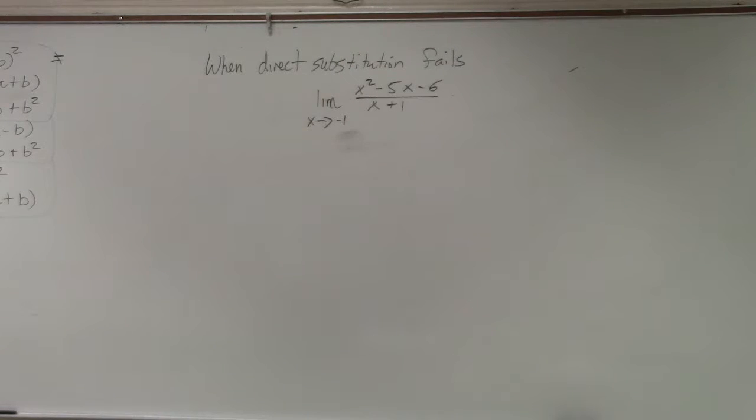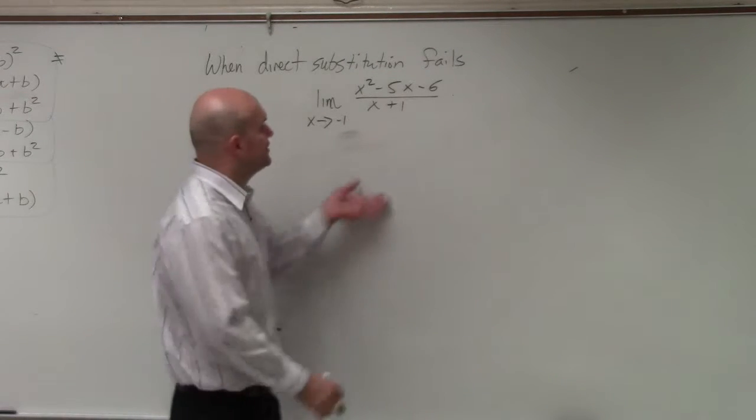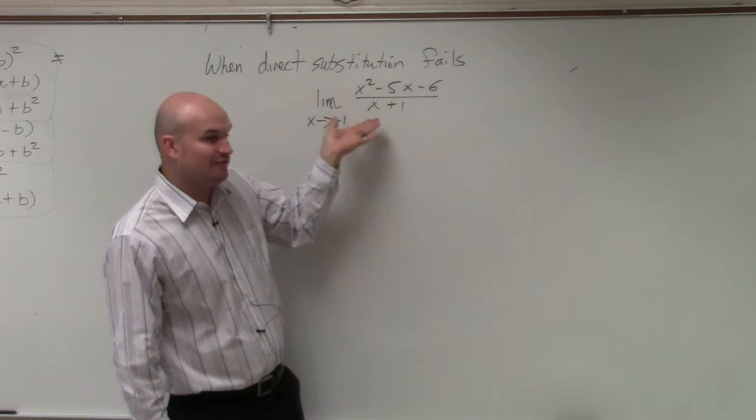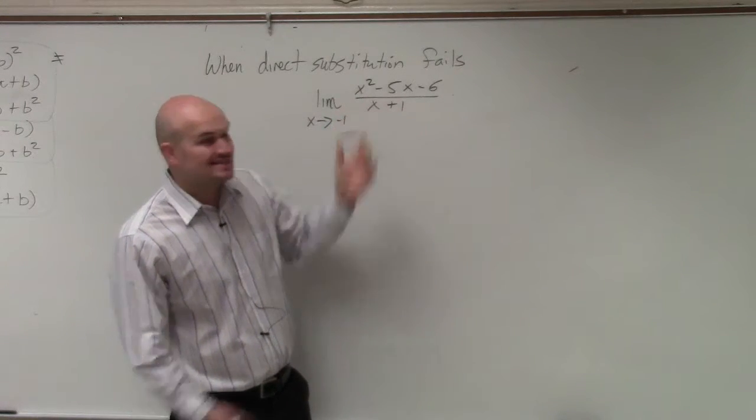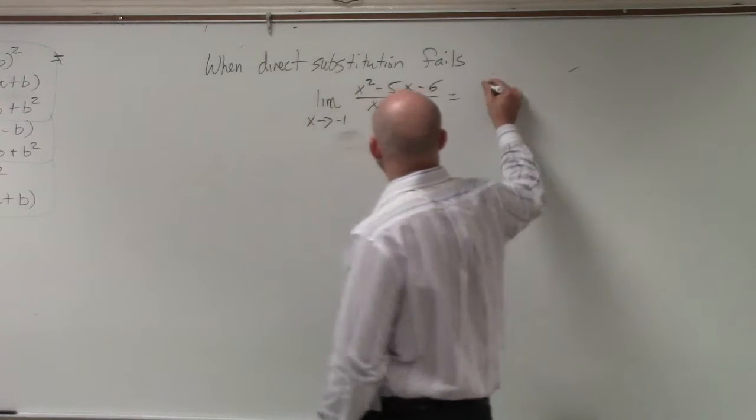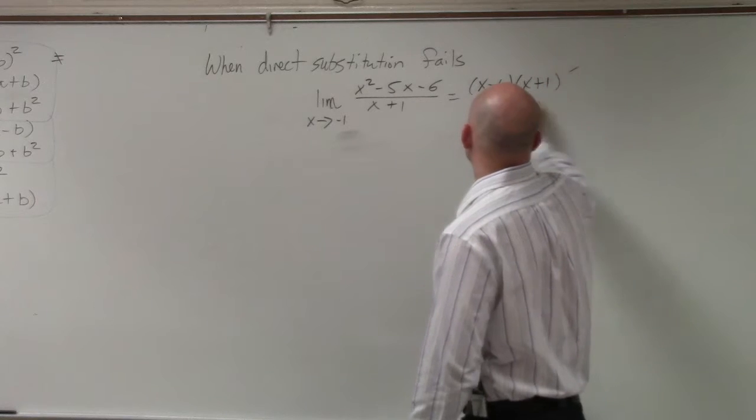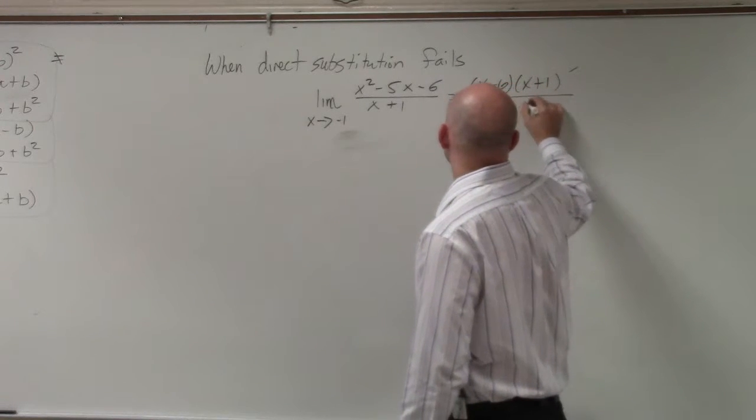Again, to do this one real quick. We look at this - I don't even need to plug it in. I automatically know that I can't plug in negative 1; I'm going to have a 0 in the denominator. So therefore, I am going to need to factor: x minus 6 times x plus 1 divided by x plus 1.